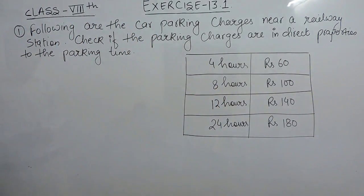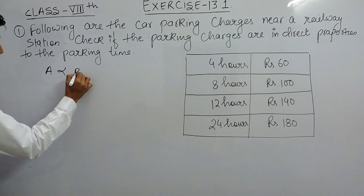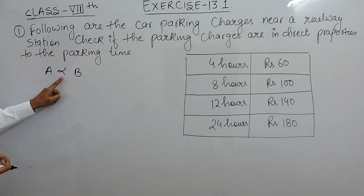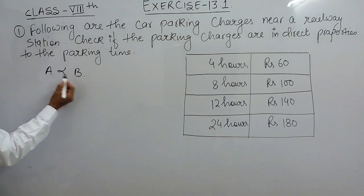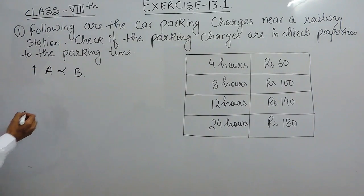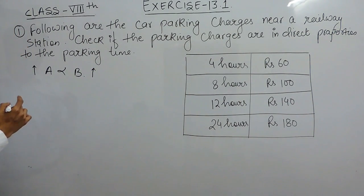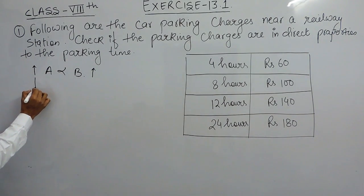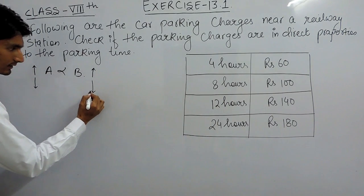Now, first of all let me explain what is direct proportion. This can be written as: a is directly proportional to b. Direct proportion basically means if I take two values and I increase one value, the second value must also increase. Or if I decrease one value, the other value will also decrease.